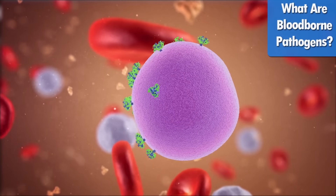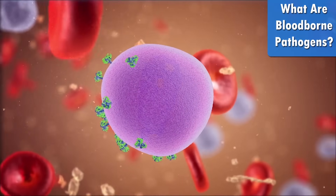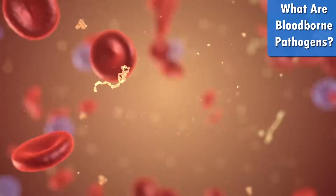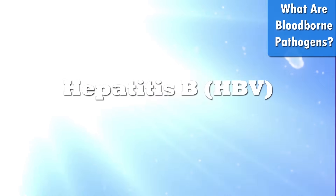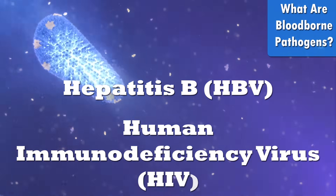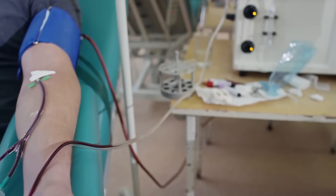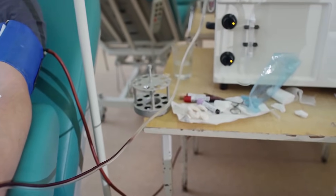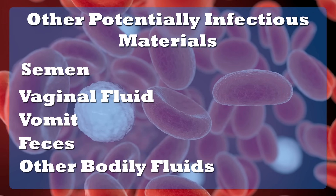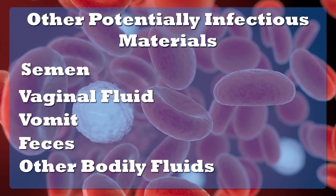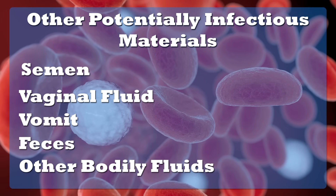Bloodborne pathogens are pathogenic microorganisms that are present in human blood and can cause disease in humans. These pathogens include, but are not limited to, the hepatitis B virus (HBV) and the human immunodeficiency virus (HIV). Bloodborne pathogens are transmitted in human blood and other fluids that may contain blood. This may include semen, vaginal fluid, vomit, feces, and other bodily fluids. OSHA considers these to be potentially infectious materials, which should be treated the same as blood.